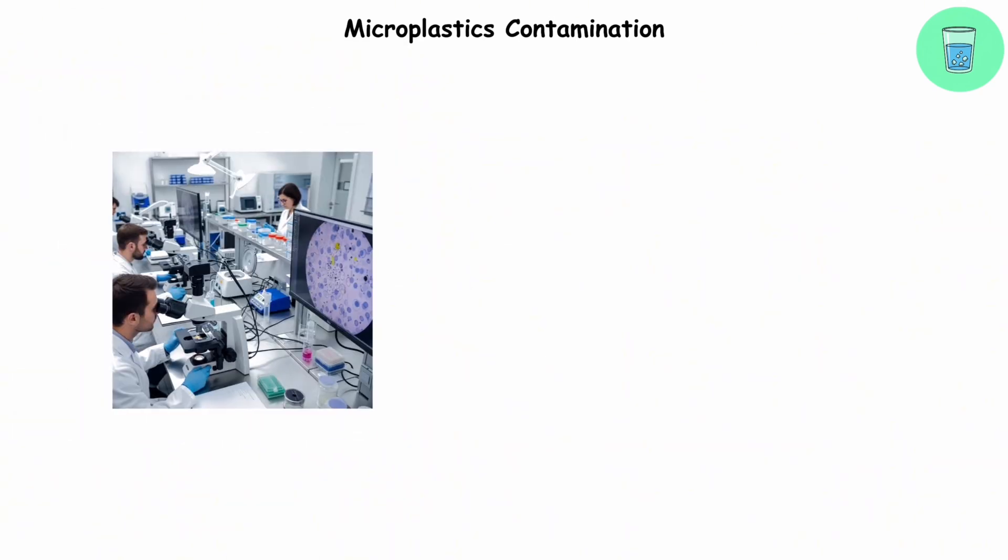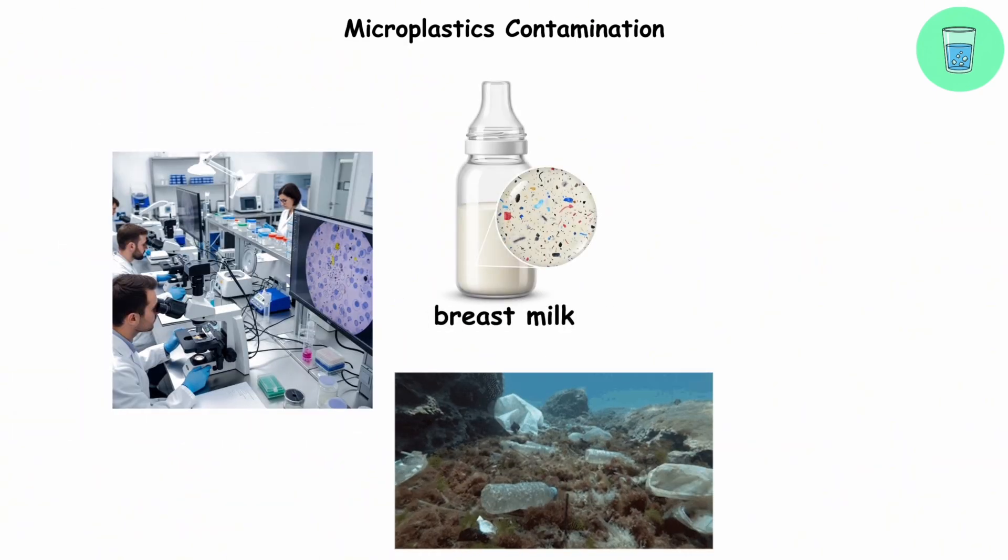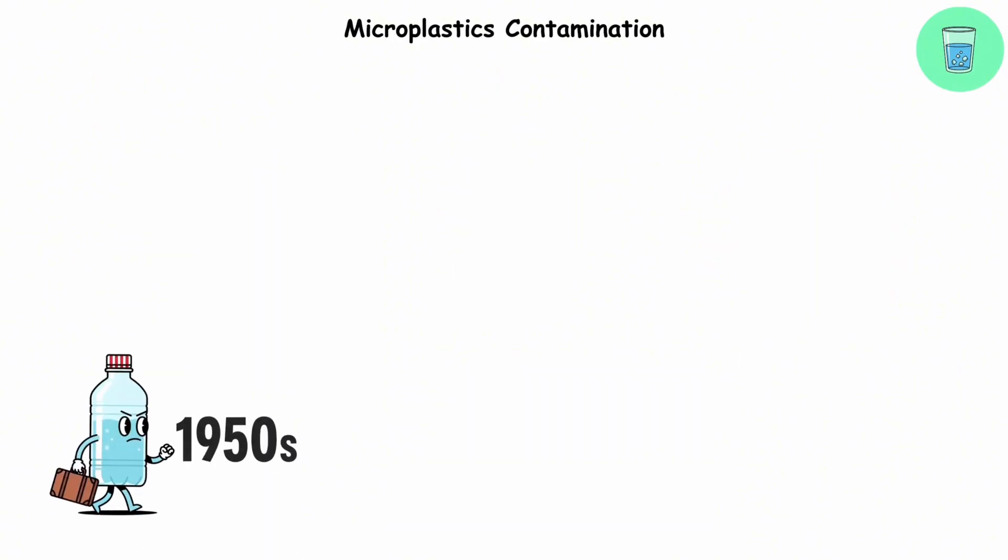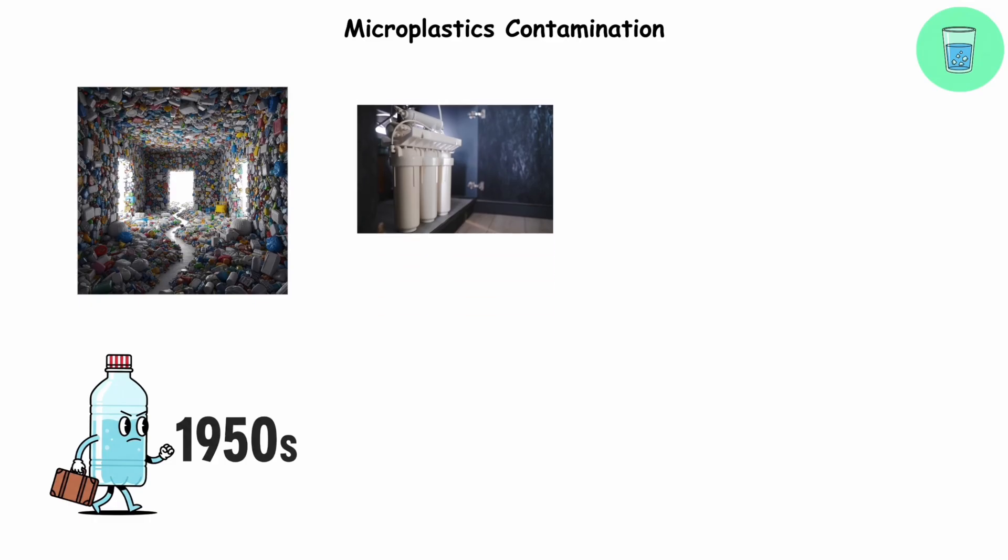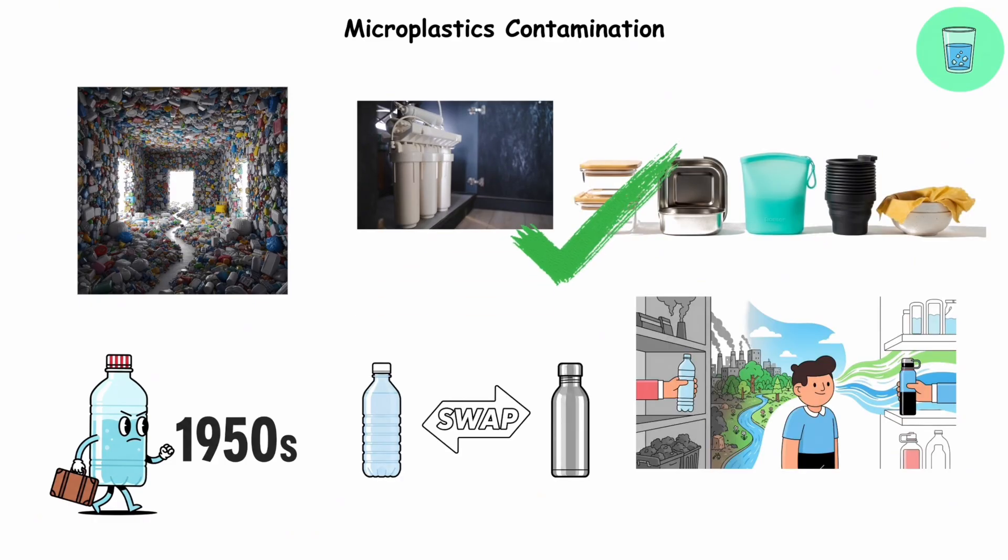And microplastics can be found everywhere, breast milk and even in blood clots. The plastic age didn't just start in the 1950s. It basically moved in and never left. Filtering water and ditching plastic containers can help. Small swaps, big difference.